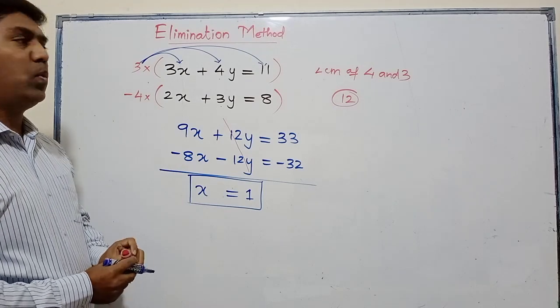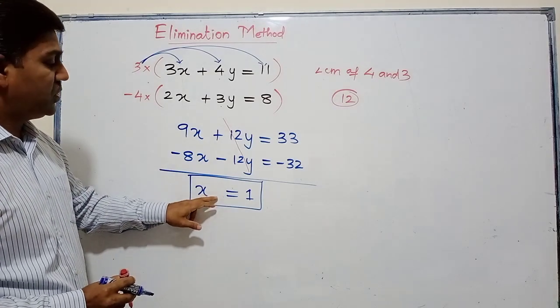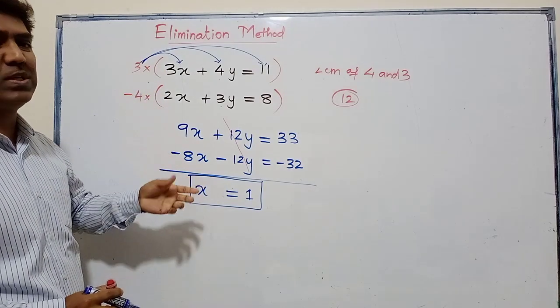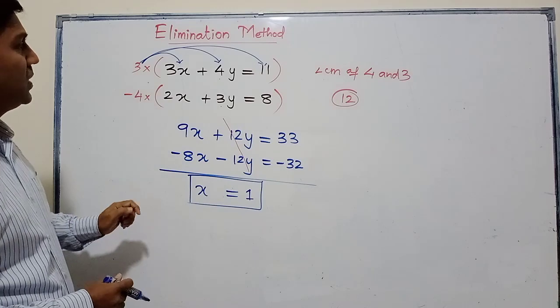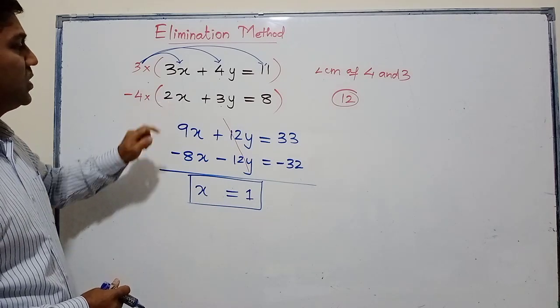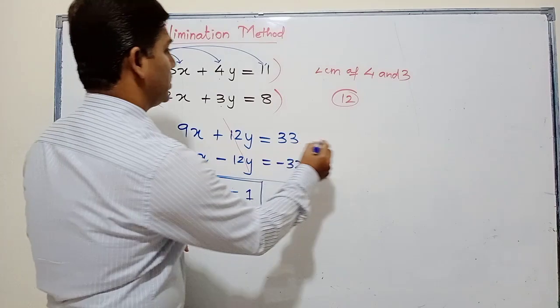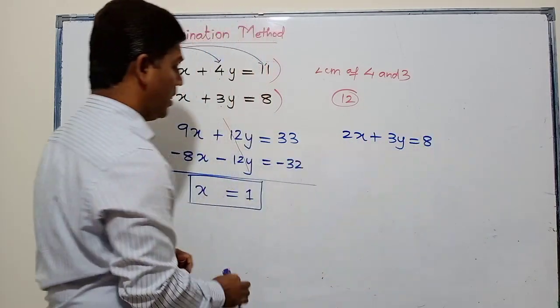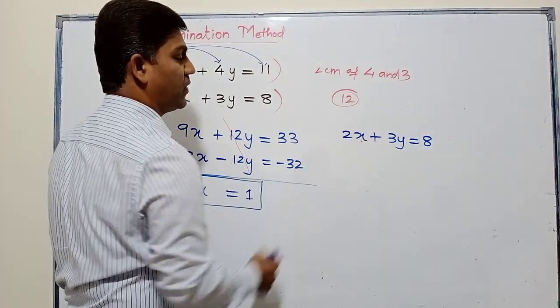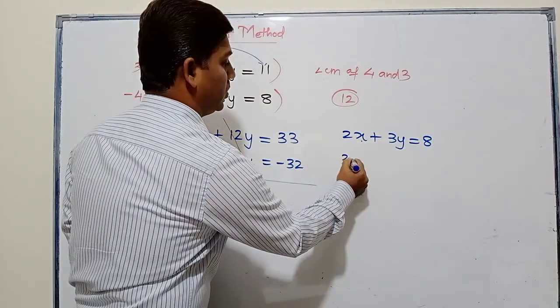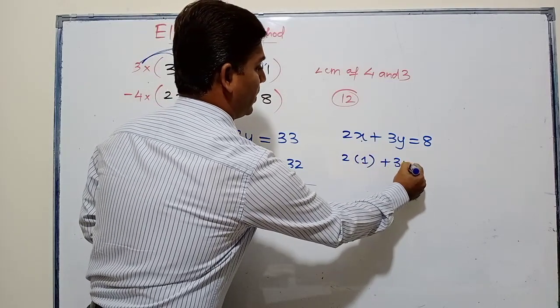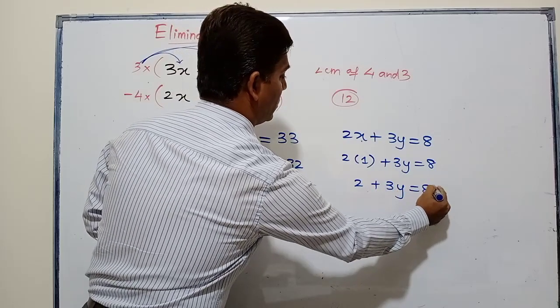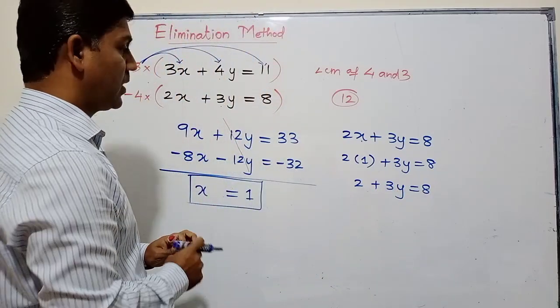Once I got the value of x, to find y I substitute the value of x in any of the four equations - the answer will be the same. So I select the easiest one. Suppose I take the equation 2x + 3y = 8. The value of x is 1, so I substitute 1 in place of x: 2 times 1 plus 3y equals 8, so 2 plus 3y equals 8.